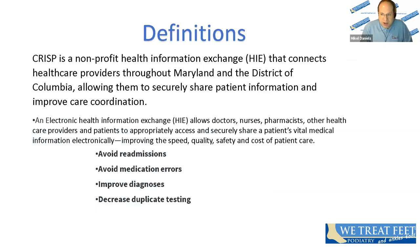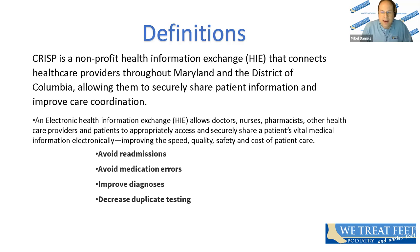CRISP is the not-for-profit health information exchange here in Maryland. It's an electronic exchange that allows providers, doctors, nurses, pharmacists, and other healthcare professionals access in a secure fashion to patients' vital medical information. The purpose of this is to avoid readmissions, reduce medication errors or duplications, improve diagnoses, and decrease duplicate testing. CRISP is a secure method for us to get medical history, lab results, and medication lists — primary things we do with all of our patients, especially new patients or patients we haven't encountered in some time. We can access information from other healthcare organizations. For example, working with LifeBridge, this gives me access to records from the Hopkins or University of Maryland systems.